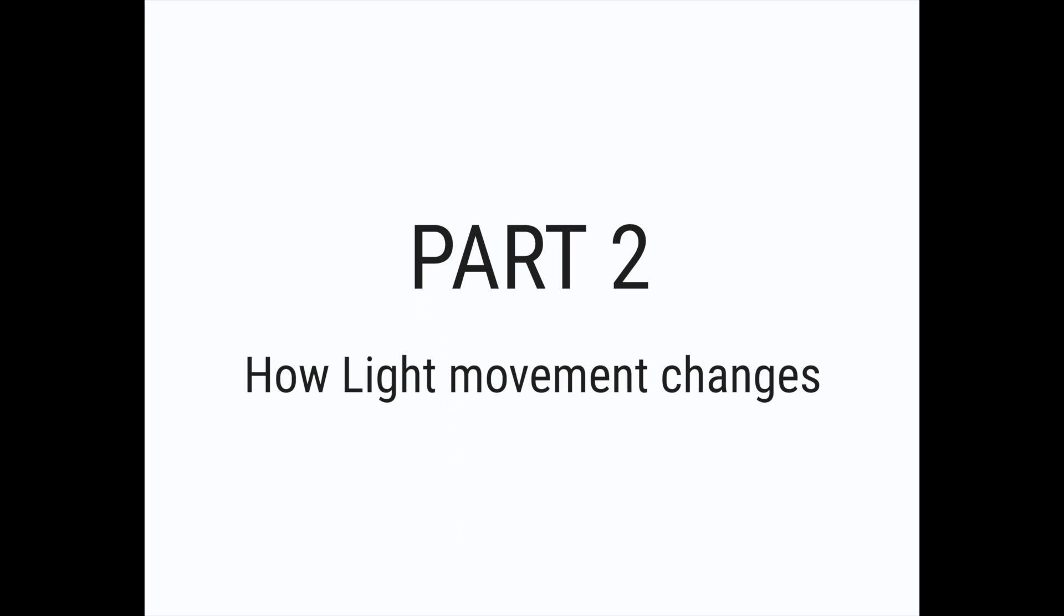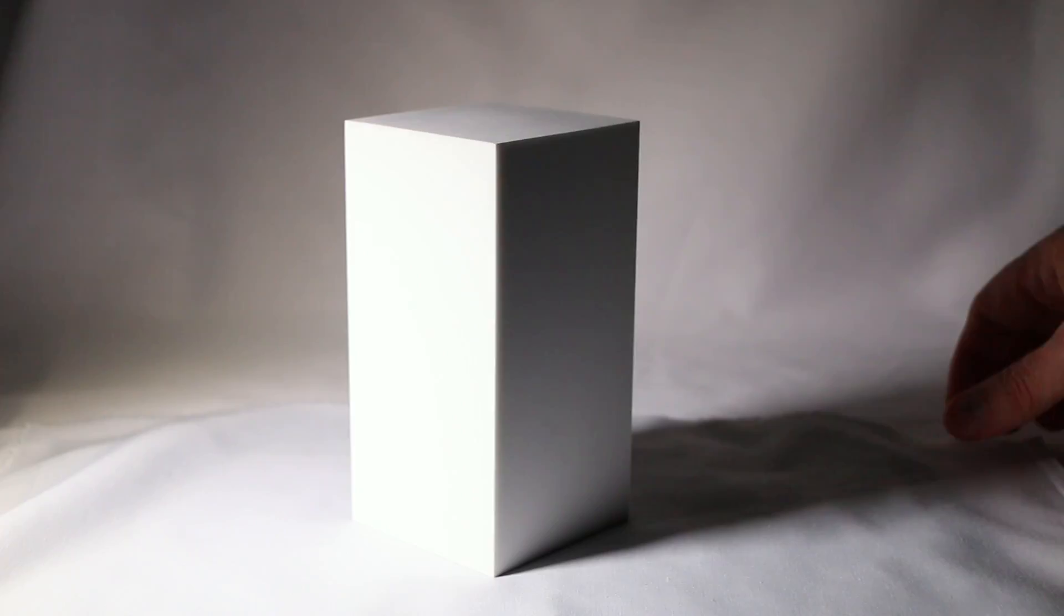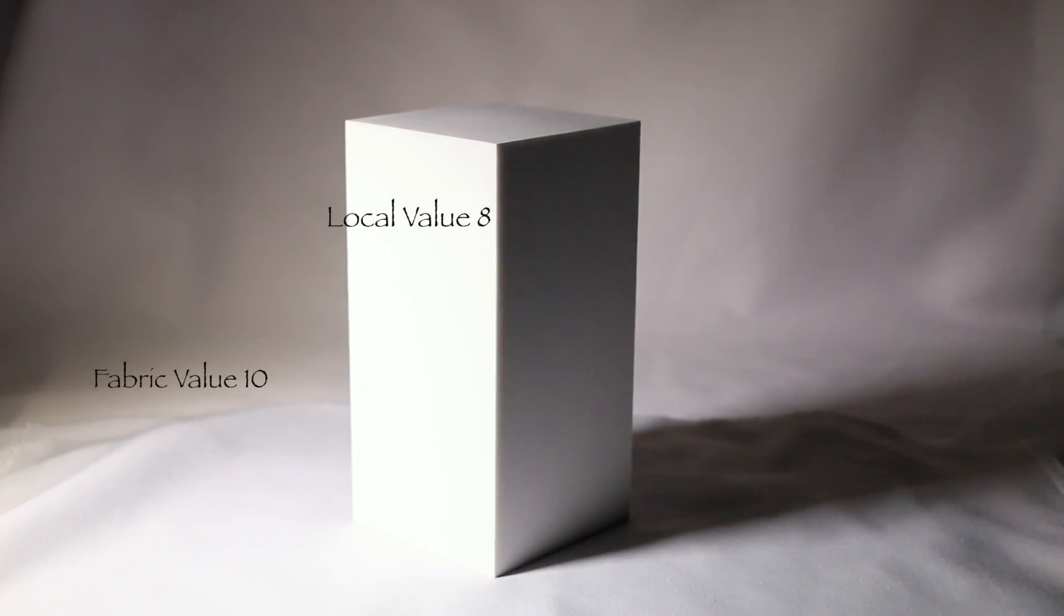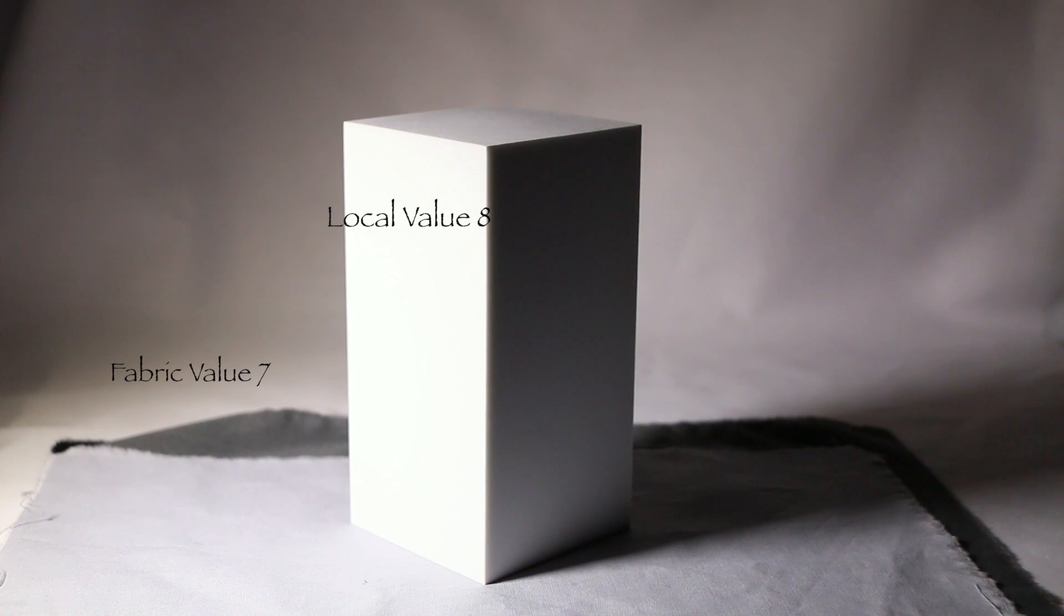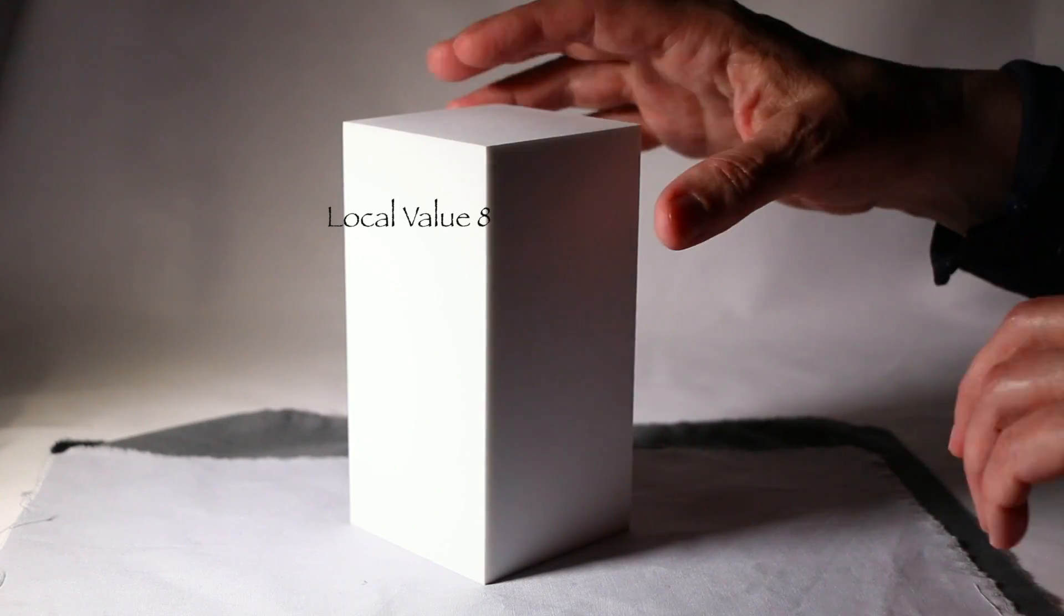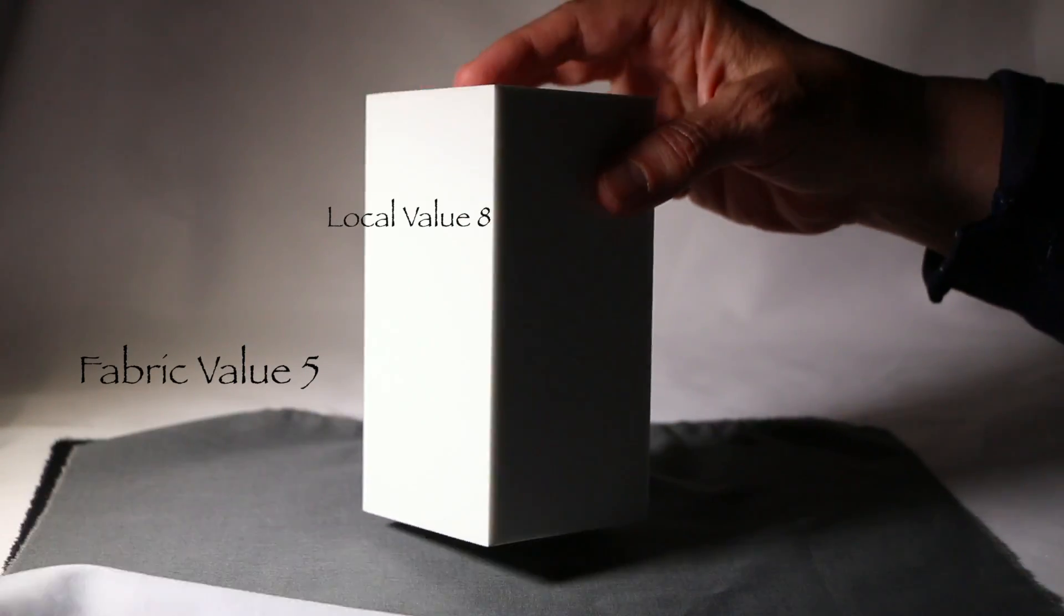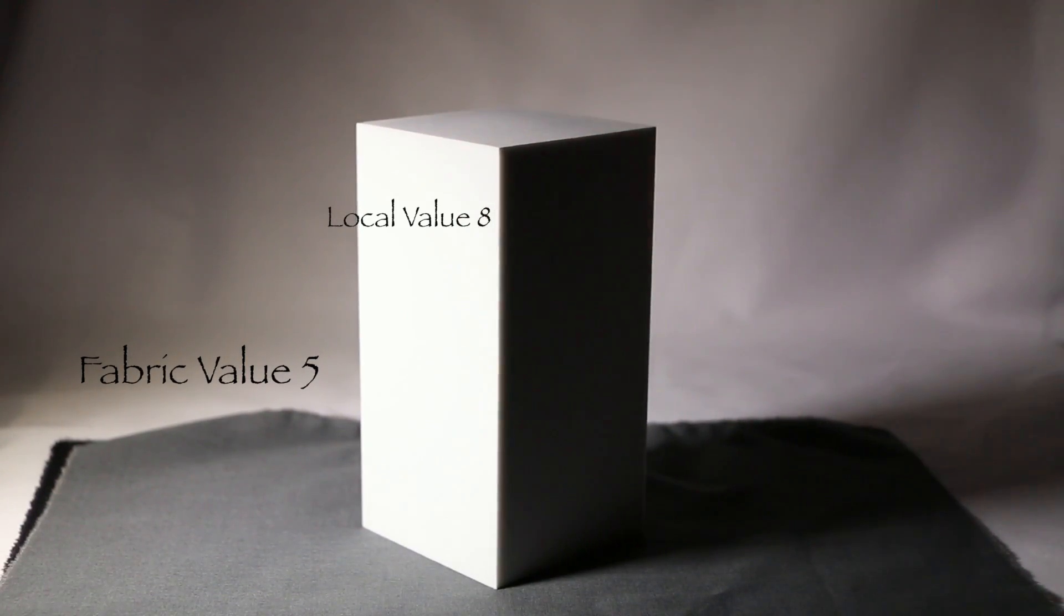Part 2. Changing the value of the ground and how it impacts light distribution. So pay attention to the reflected light area right here. Our fabric value is 10 which is white. Our local value of our object is 8. Now we've dropped the value to 7. You can see that the reflected light is becoming a little less. And then value 5. There is still some reflected light but not a lot.